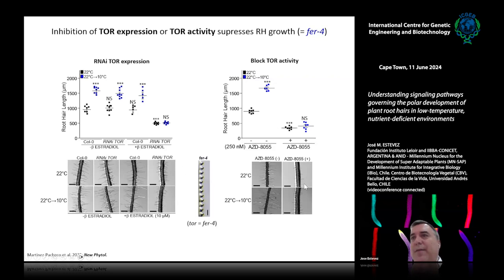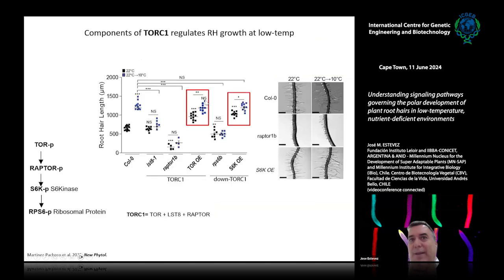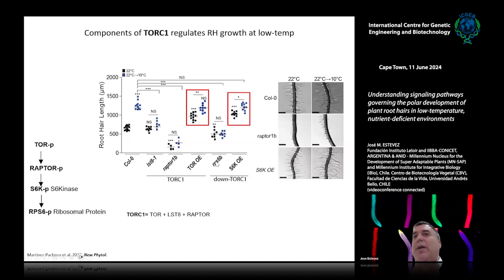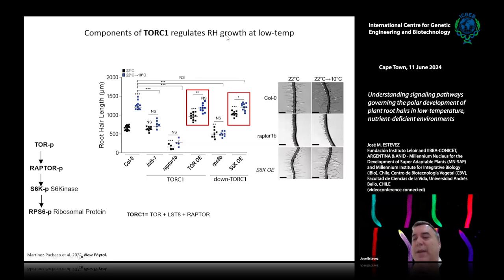The TOR phenotype was very similar to that of Feronia, suggesting they might be connected. We tested all components of the TORC1 complex — LST8 and Raptor1B mutants show no low temperature response. When we overexpress TOR, we see enhanced root hair growth. Knocking out the ribosomal protein RPS6, downstream of TOR signaling, also abolishes the low temperature response. When we overexpress S6K — the kinase downstream of TOR — we see upregulated growth. This tells us TORC1 regulates root hair growth at low temperature.